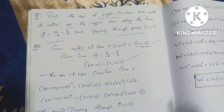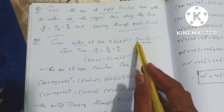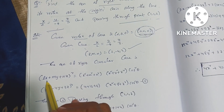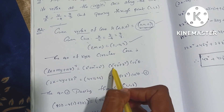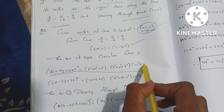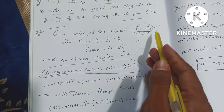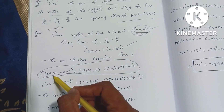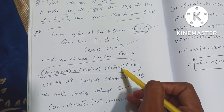The equation of the right circular cone with vertex at (0, 0, 0) is: (Lx + My + Nz)² = (L² + M² + N²)(x² + y² + z²)cos²θ. Substituting L=2, M=−4, N=3: (2x − 4y + 3z)² = (L² + M² + N²)(x² + y² + z²)cos²θ.